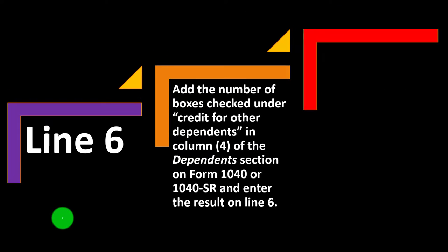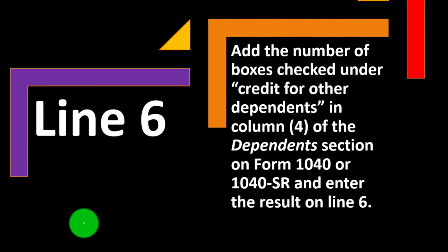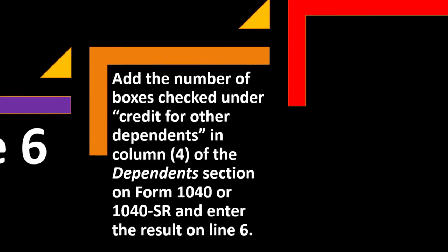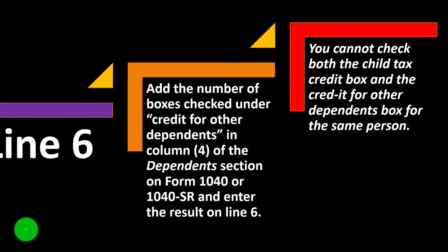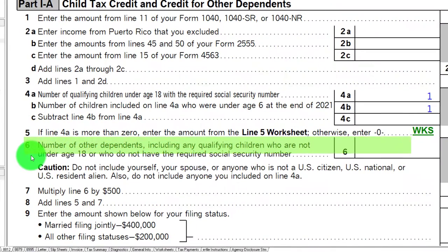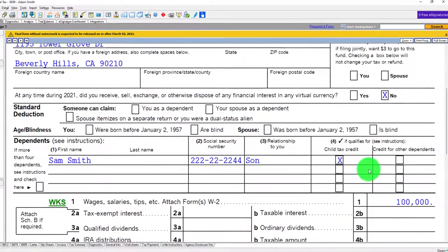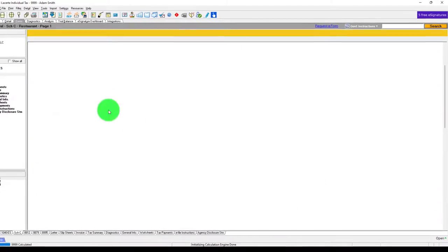Line 6: add the number of boxes checked under Credit for Other Dependents in column 4 of the dependents section on Form 1040 or 1040-SR and enter the result on line 6. You cannot check both the Child Tax Credit box and the Credit for Other Dependents box for the same person. So if you have someone listed as a dependent, you can only have one of those boxes checked.